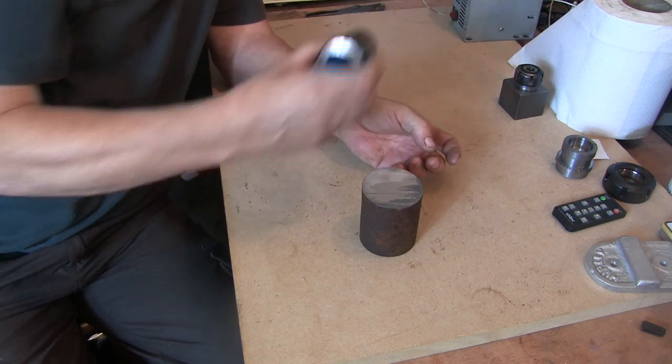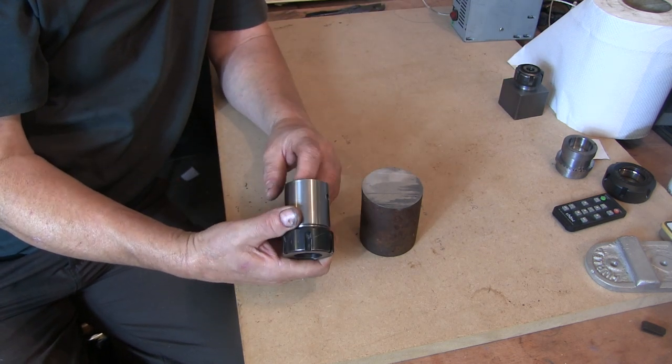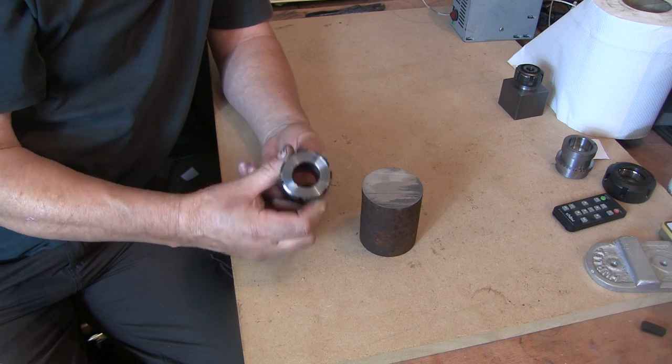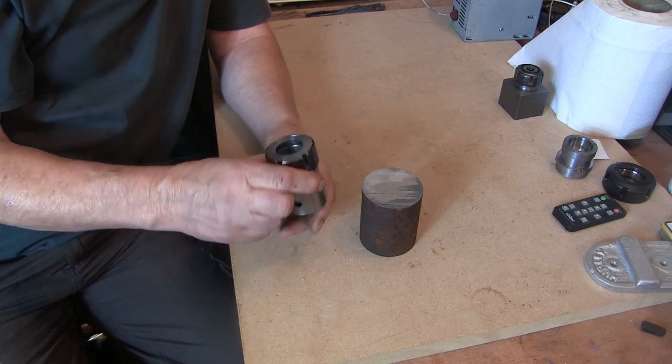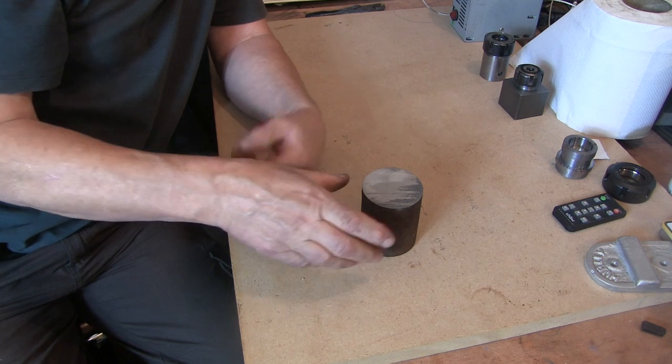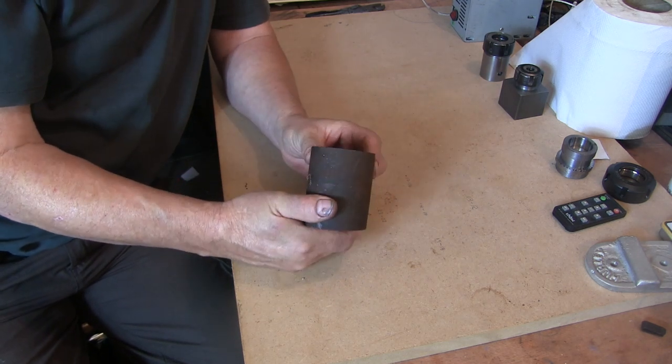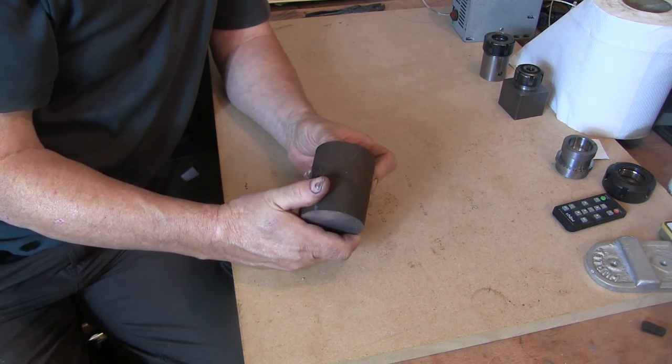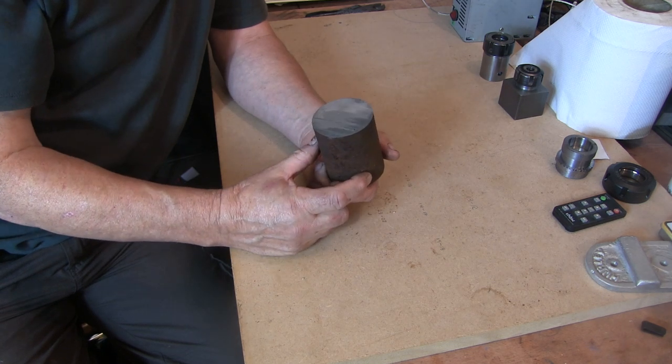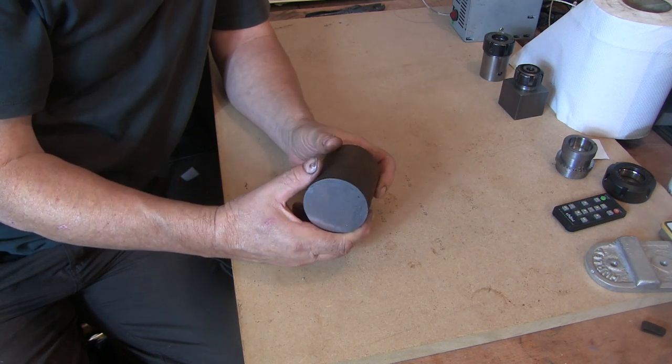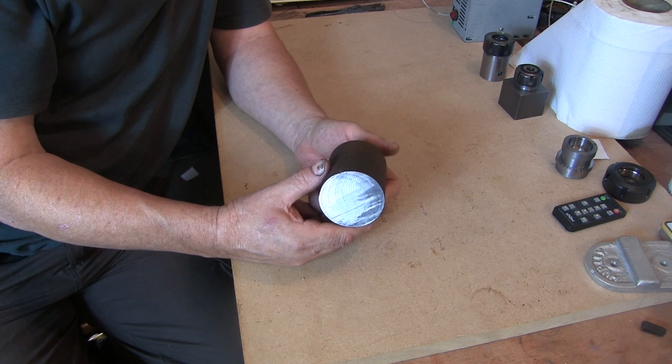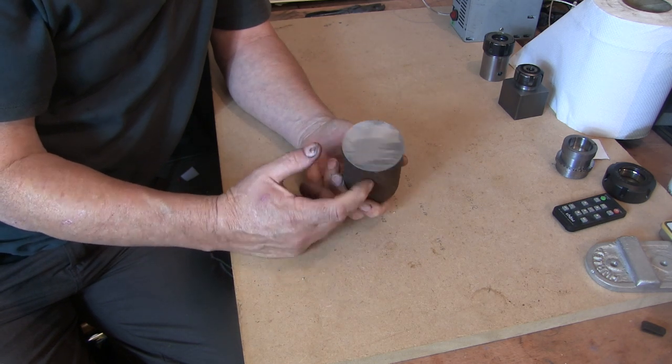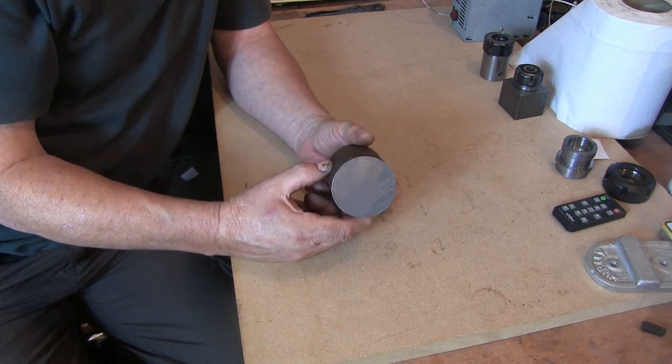This original ER32 one I made, that's just out of a bit of EN1A, and that's been fine, that works fine for me. But this is very hard gear. I have turned a bit of this before. It turns alright with a bit of a carbide, but it is very hard. So, but that is what I want.